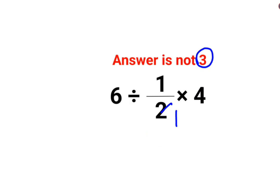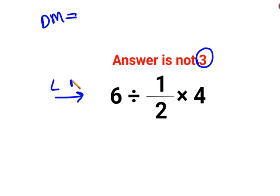The reason for that is in sums like these, it's very important to realize that division and multiplication always hold equal precedence. So you just go from left to right in sums like these. Whatever operation happens first on your left-hand side has to be done first.